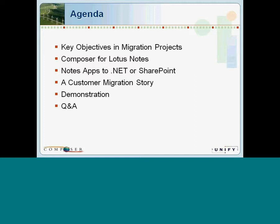First, a little bit about Unify. We're a publicly traded software company with a 25-year history, which includes being the first company to deliver a relational database in the Unix environment. Today, the company's focus is in three core areas: relational databases, rapid application development software tools for building business applications on both Windows and Java platforms, and software solutions that assist companies in modernizing their legacy applications — specifically migrating Lotus Notes applications to the Microsoft platform.